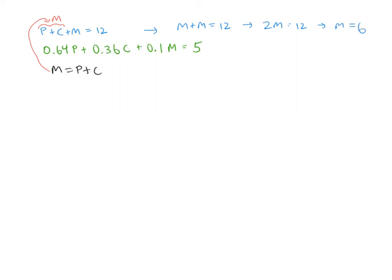Now if I plug that number six into the first and second equation, I get P plus C plus six equals 12. So in other words, P plus C equals six. And then the second equation, I get 0.64P plus 0.36C plus 0.1 times six equals five.